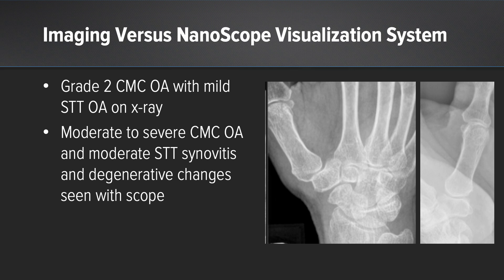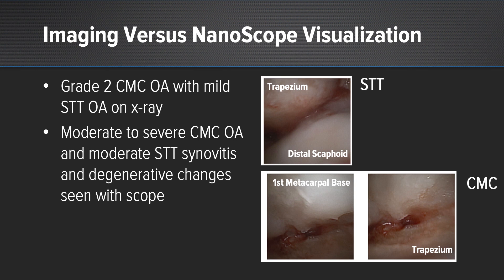However, using the nanoscope, we see the CMC joint has significant arthritis and a chondral defect, as well as significant synovitis at the STT joint.